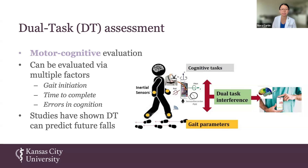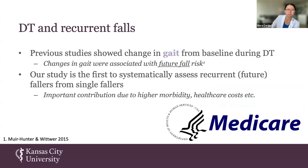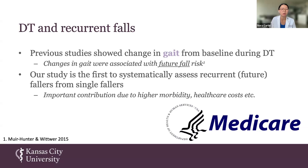Studies have shown that dual tasks can predict future falls. This was specifically seen in a study by Moore and Hunter, who found that there was a change in gait from baseline when using dual task as opposed to just being asked to walk, and these changes in gait were associated with future fall risk. Using that study as a basis, we hope our study will be the first to systematically assess recurrent and future fallers from single fallers, contributing to healthcare by identifying when patients are at higher risk.